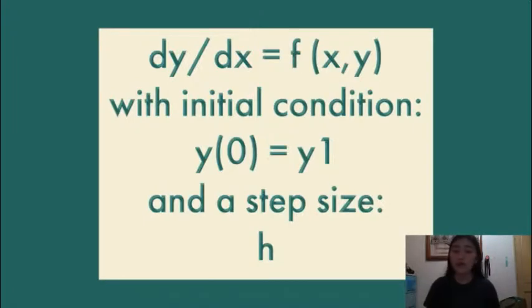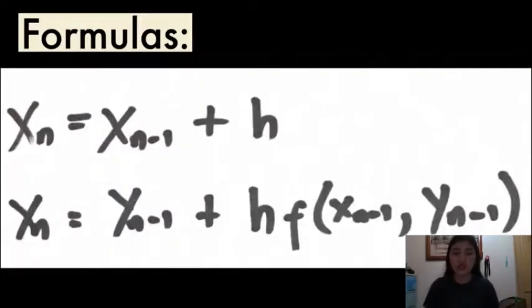We have dy over dx equals f of x and y, with an initial condition y of 0 equals y1, and a step size represented by h. The formula for xn and yn is: xn equals xn minus 1 plus h, and yn equals yn minus 1 plus h, multiplied by the given equation.